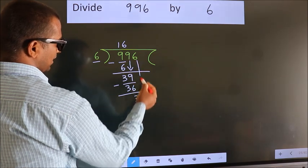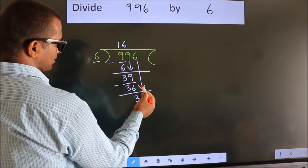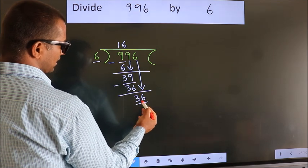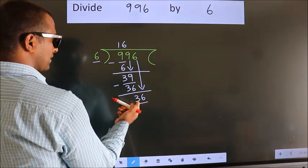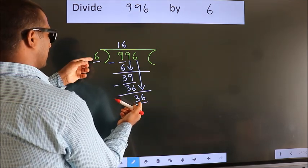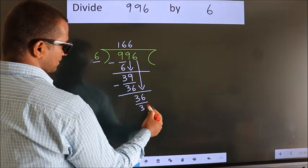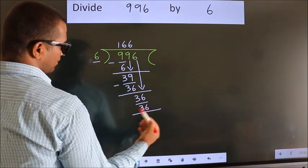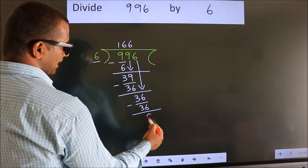After this, bring down the beside number. So 6 down. So 36. When do we get 36? In 6 table. 6 6 36. Now we subtract. We get 0.